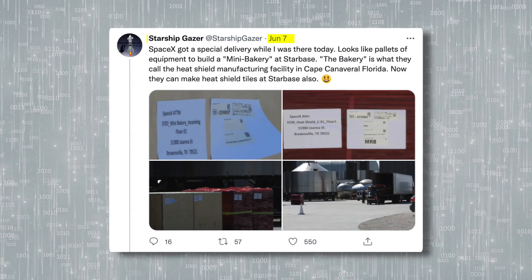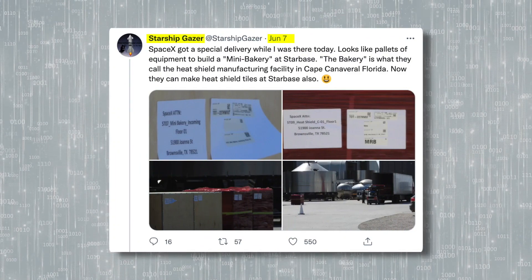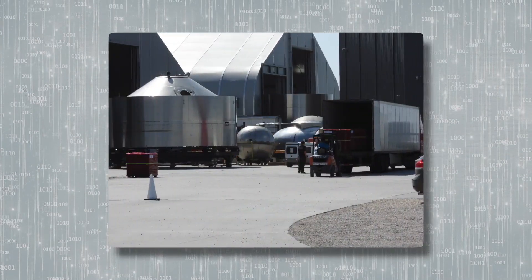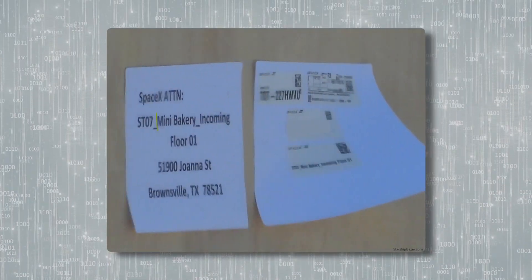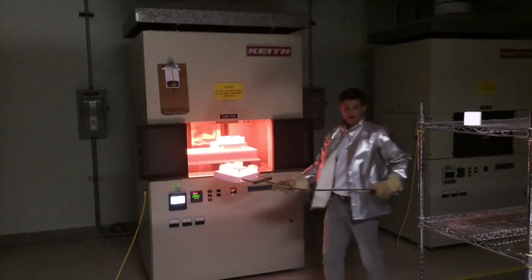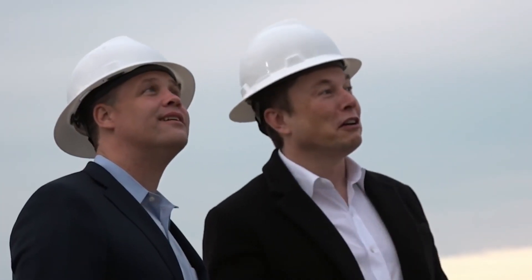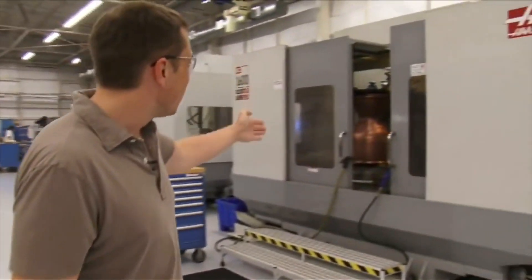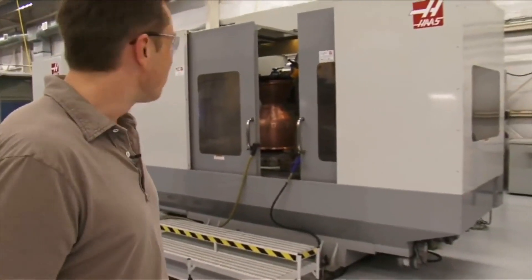On June 7th, Twitter user StarshipGazer took some photos of a delivery to Starbase. They managed to get fairly clear photos of delivery labels. This guy has a really good camera. Some of these labels reference something called a mini bakery. This could mean that they're preparing to build a local bakery, but again, not the kind that serves up baguettes to hungry engineers.